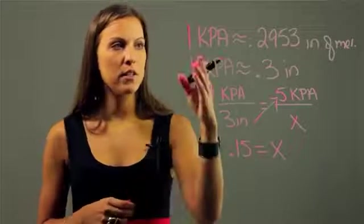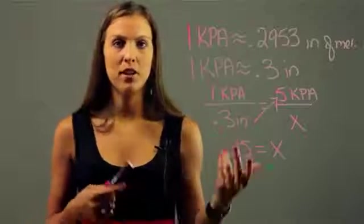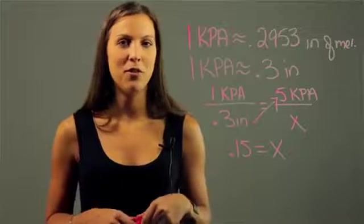So the conversion you need to know is 1 kPa is approximately 0.3 inches of mercury, and then just set up your proportion and solve. My name is Maria, and I just showed you how to convert kPa to inches of mercury.